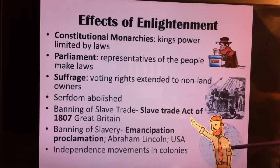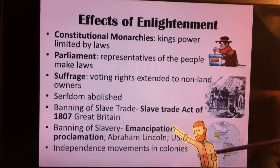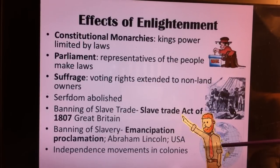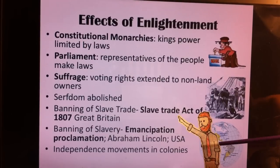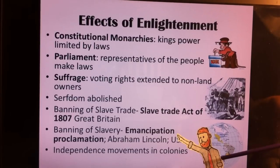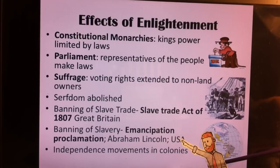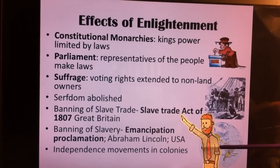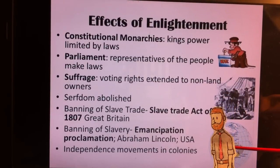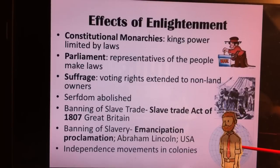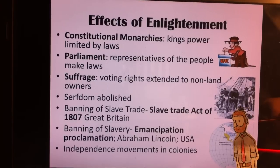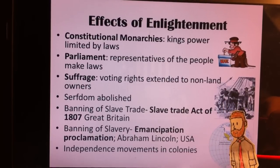With the Enclosure Acts breaking up the commons, serfdom ended. You also have the banning of the slave trade, which happened before slavery itself was banned — it was made illegal to take people from Africa and sell them into plantations. Eventually slavery was banned as well, occurring in the United States after the Civil War when Abraham Lincoln issued the Emancipation Proclamation, and then other countries began to ban slavery too. You also have independence movements in the colonies, where colonies broke away from their European mother countries and established their own governments — which we'll talk about in the next couple of lessons.